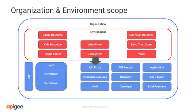As you decide how many organizations and environments to create, remember what they are. Both organizations and environments are logical boundaries which enforce data partitioning and security. Two organizations share nothing. APIs, API keys, and other items within a given organization are not visible from others. When deciding how many organizations and environments to create, always assume an outside-in position. Do not let your internal limitations, challenges, or preferences drive what your customers see and use.